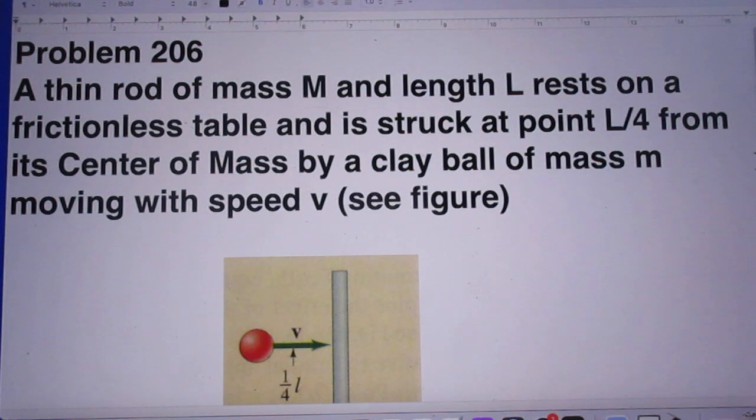A thin rod of mass capital M and length capital L rests on a frictionless table and is struck at point L over 4 from its center of mass by a clay ball of mass lowercase m. And that clay ball is moving with speed v, as you can see in the figure.